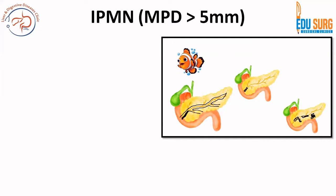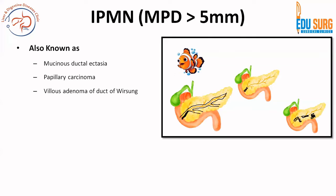When we talk of IPMN by definition, the main pancreatic duct diameter is greater than 5 mm. That is a very important point to remember — in IPMN, the MPD is greater than 5 mm.